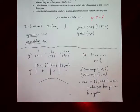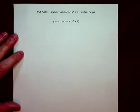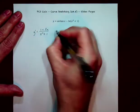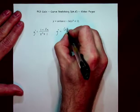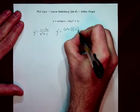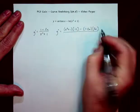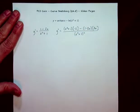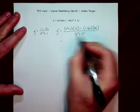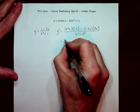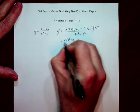Now y double prime is going to be a little more difficult, but it's a pretty straightforward quotient. Rewriting y prime as (1 minus 2x) over (x squared plus 1), y double prime uses the quotient rule: denominator times the derivative of the numerator, minus numerator times the derivative of the denominator, all over the denominator squared. After distributing and collecting like terms, it simplifies to a cleaner expression.